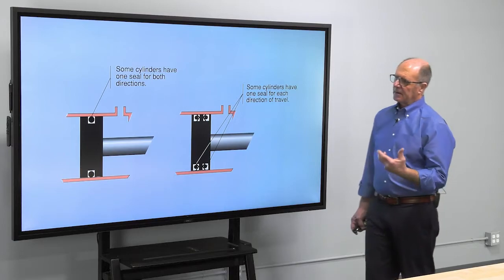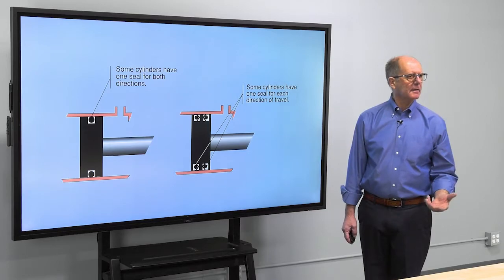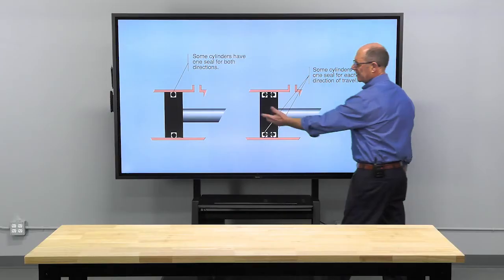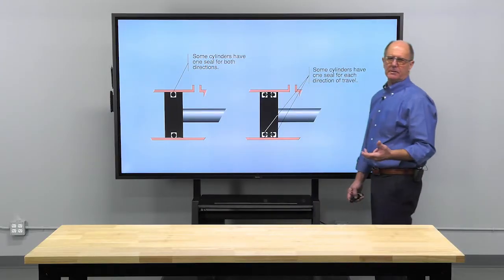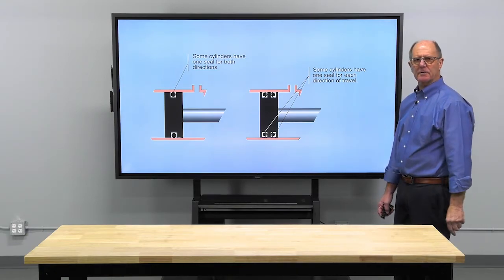Now, first and foremost, it's a dangerous procedure, but it's also unscientific. For example, we don't know when we're testing a hydraulic cylinder if it has a single seal for both directions of travel or one for each direction of travel.